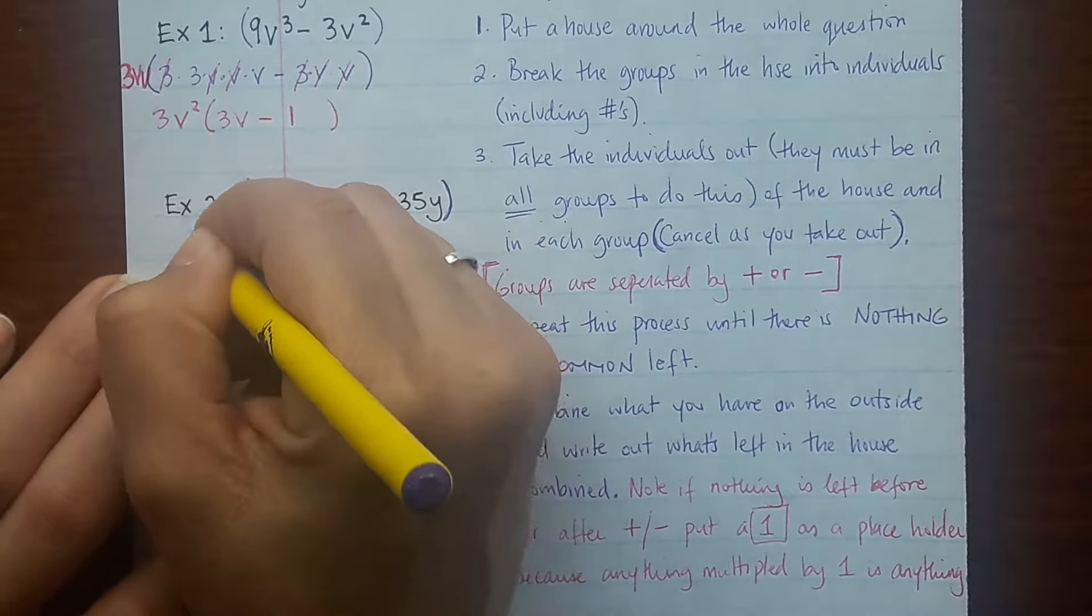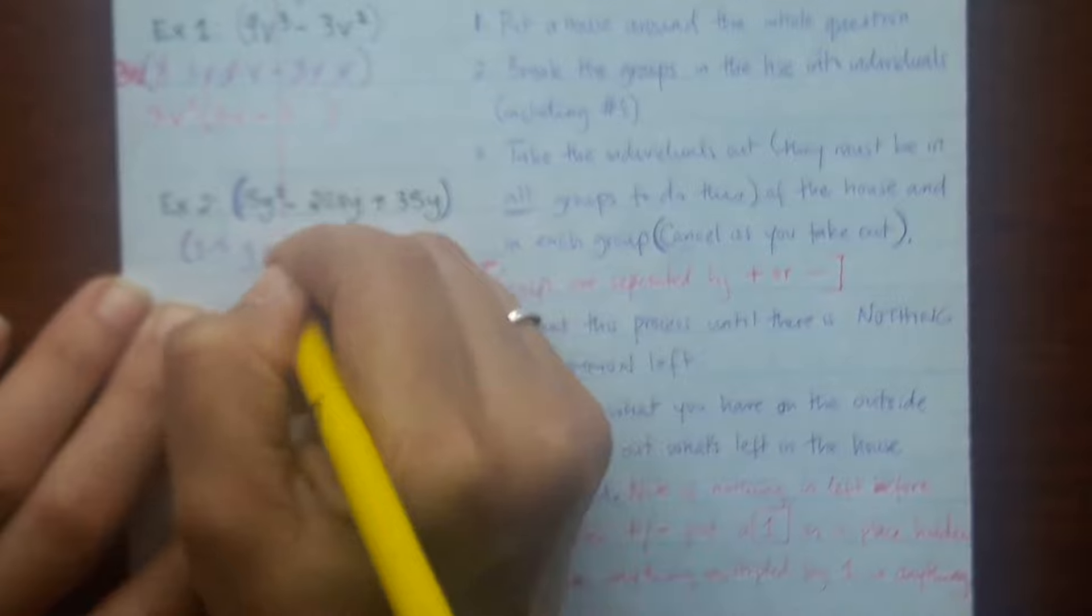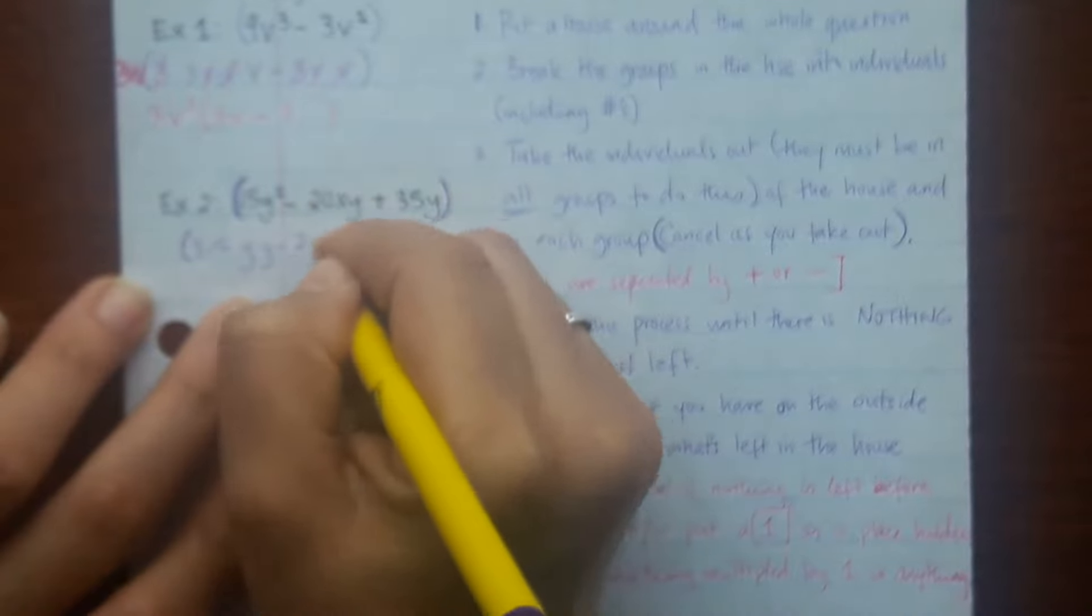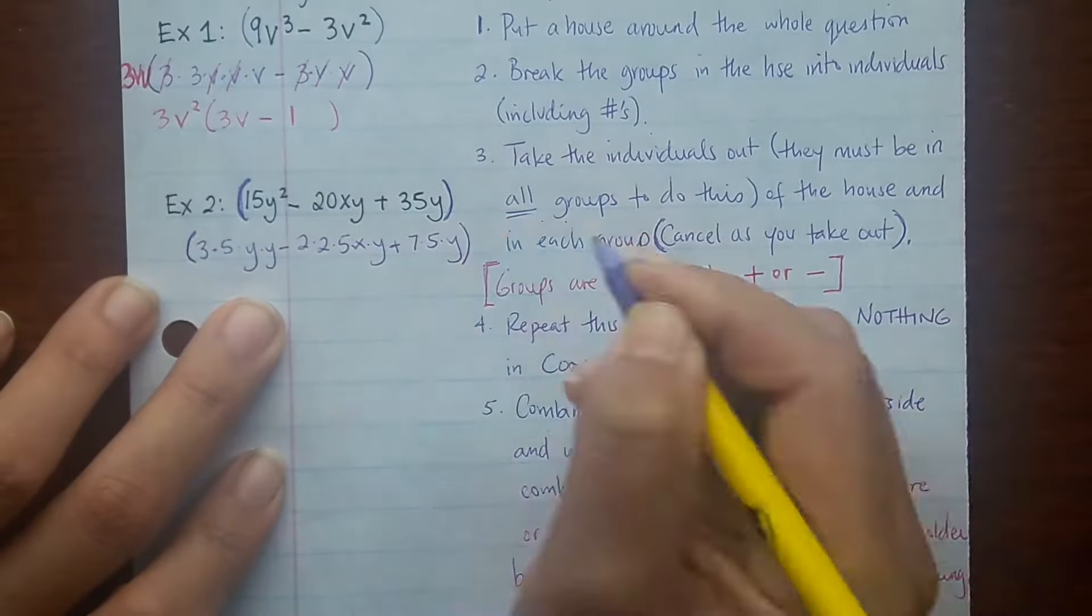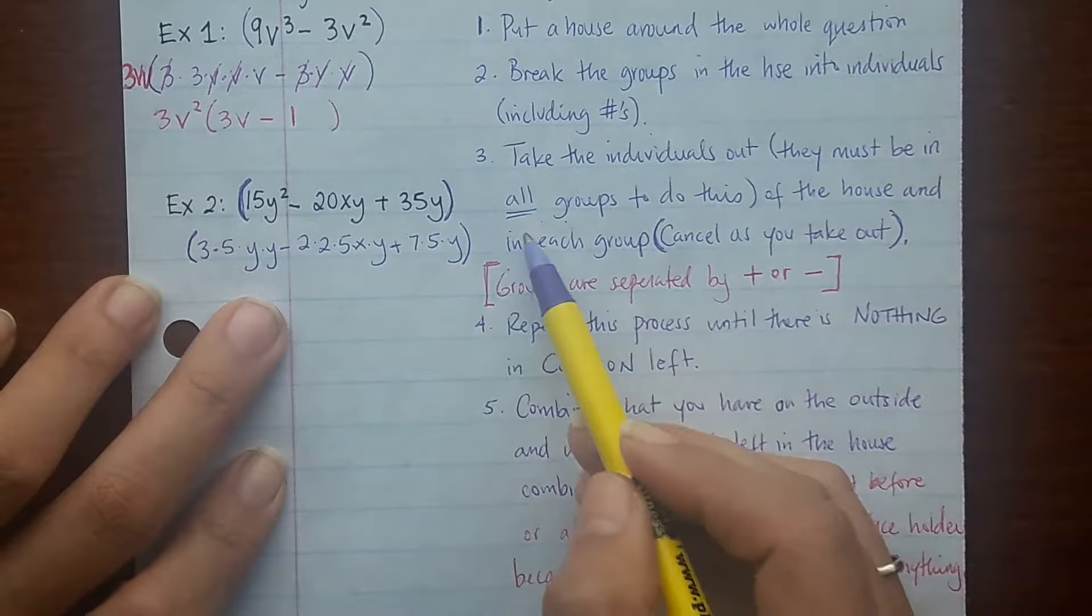So breaking 15 down: 3 times 5, and then 2 y's. Breaking 20 down: 2 times 2 times 5, and then we have xy. And then breaking 35 down: 7 times 5, and then we have y.